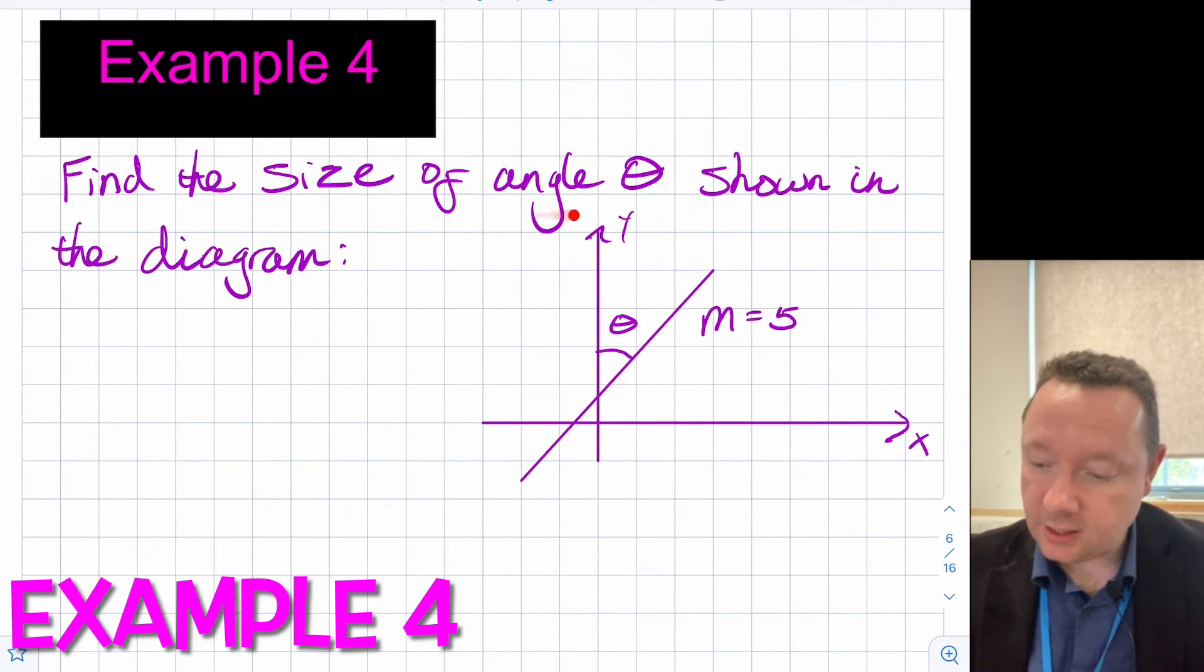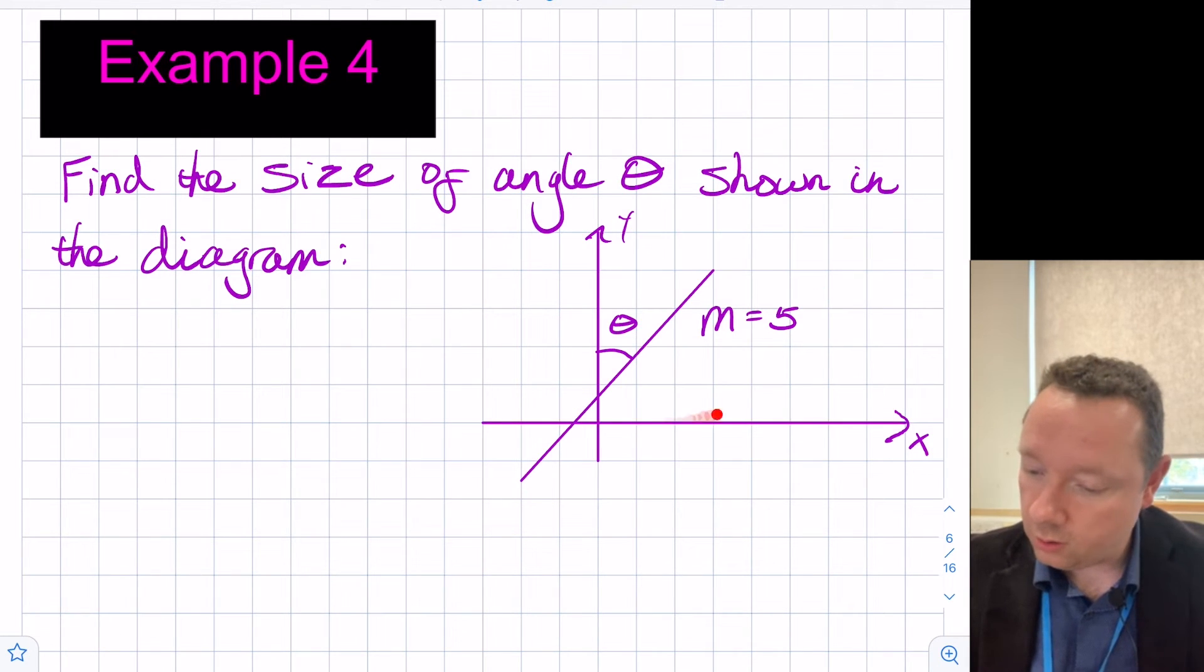Example four says find the size of angle theta shown in this diagram. And we have got the diagram here where theta, again, is on the y-axis. So it's a bit of a trick. But we can work out some other angle and it adds up to 90. So if I draw that in here, if I just draw a horizontal line across here, we know that we can work out this angle here. Let's call it alpha.